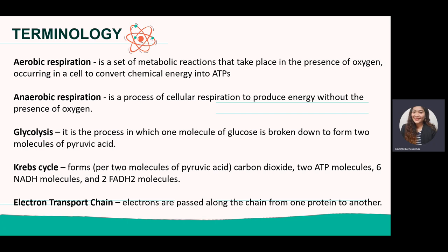Glycolysis is a process in which one molecule of glucose is broken down to form two molecules of pyruvic acid, or pyruvate. It is the first step in cellular respiration. The Krebs cycle is the second step, also known as the citric acid cycle. It processes two molecules of pyruvic acid and produces two ATP molecules, six NADH molecules, and two FADH molecules.